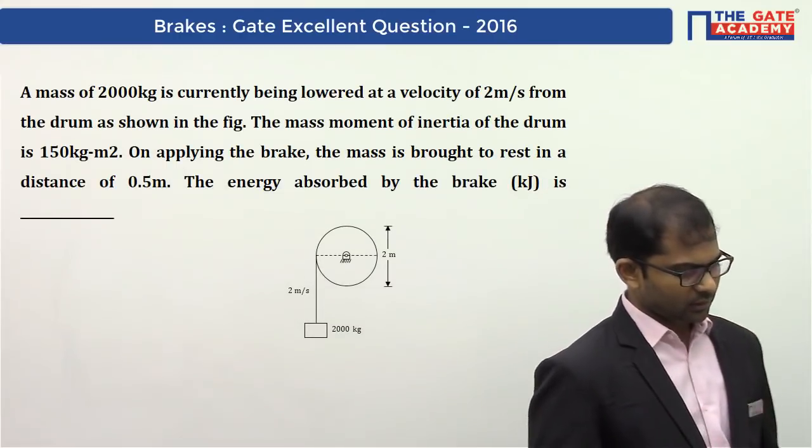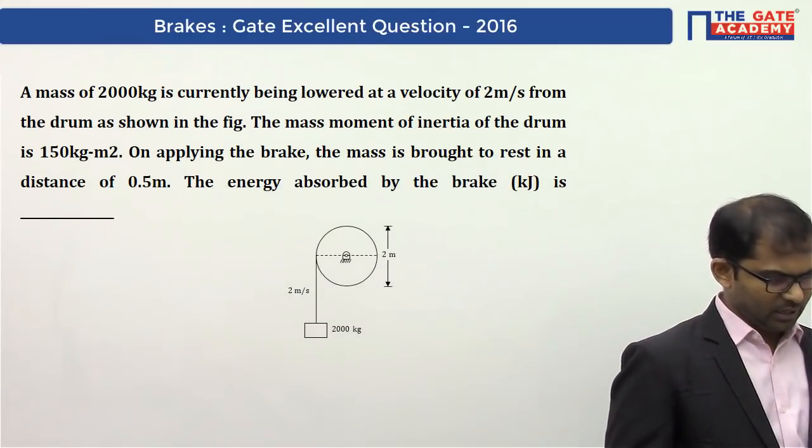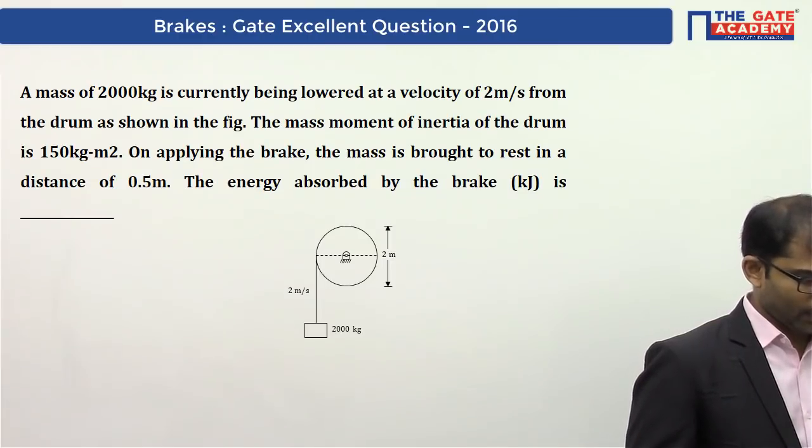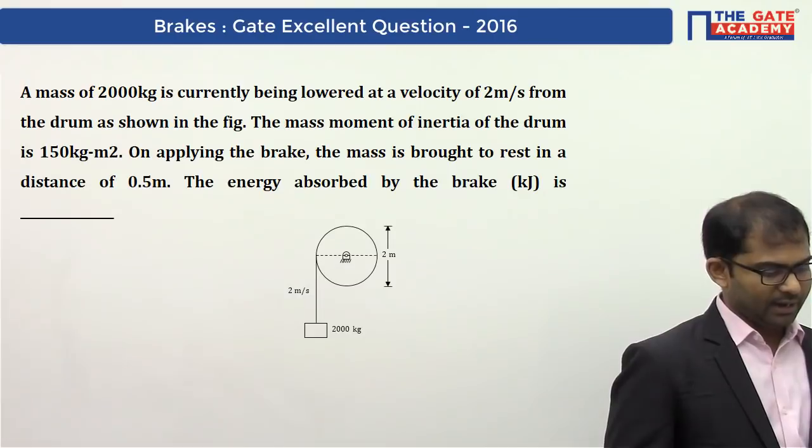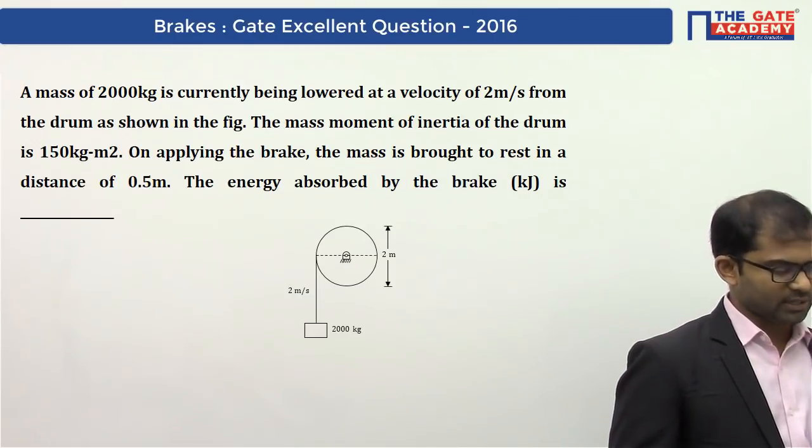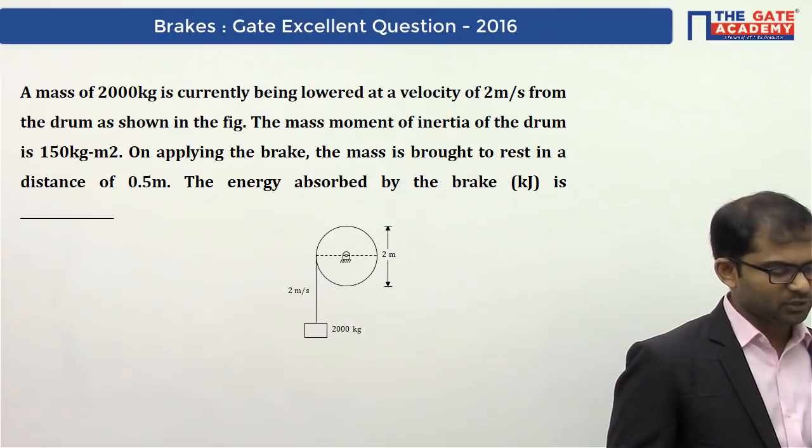A mass of 2000 kg is being lowered at a velocity of 2 m/s from the drum as shown in the figure. The mass moment of inertia of the drum is 150 kg·m². On applying the brake, the mass is brought to rest in a distance of 0.5 m. The energy absorbed by the brake is how much?